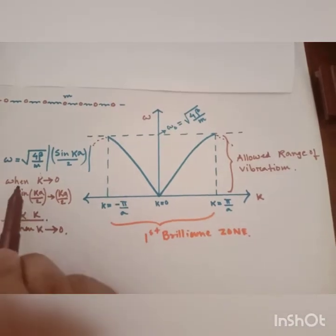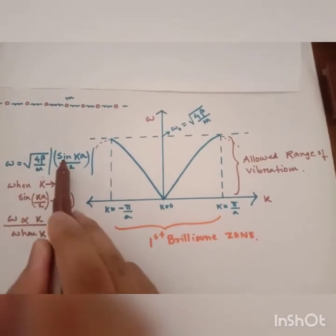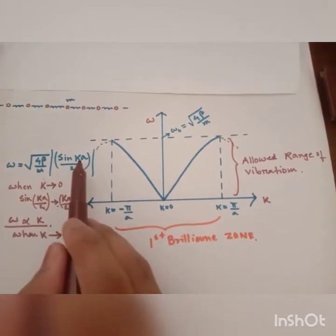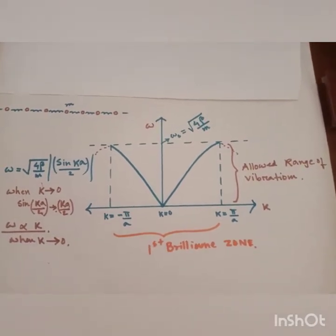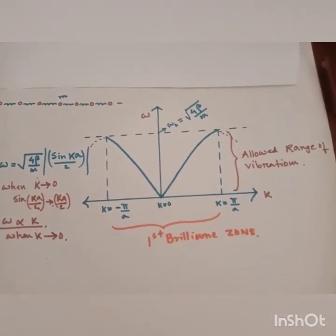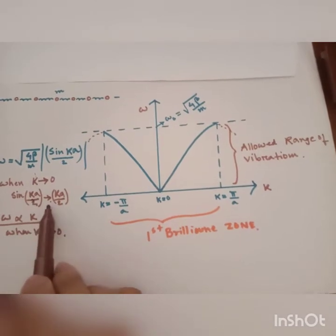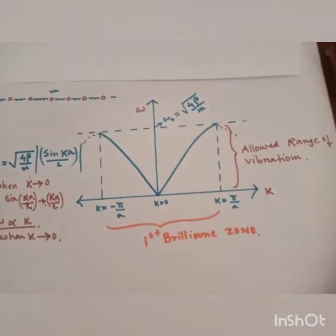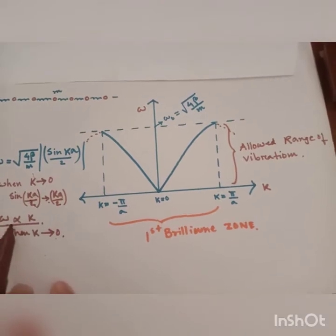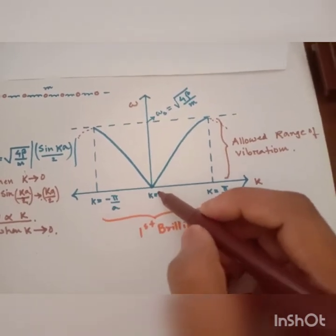Now, as we can see, when k tends to zero, sin ka/2 is approximately equal to ka/2. We know that in the limit as k tends to zero, sin theta is approximately theta for small angles. So when k tends to zero, omega is directly proportional to k. That's why for smaller values of k, when k tends to zero, our graph varies linearly with omega.